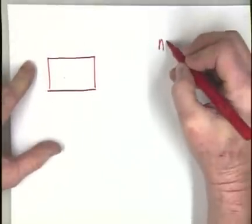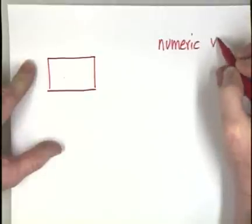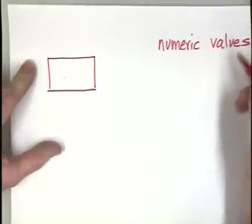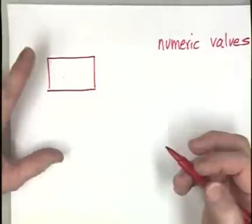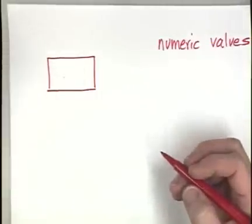Well, you can put things in there like numeric values, like any number, you know, 15.3, 27, any number. A numeric value can be put into a location in memory.